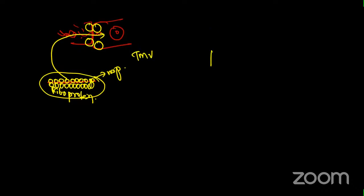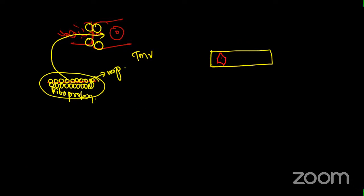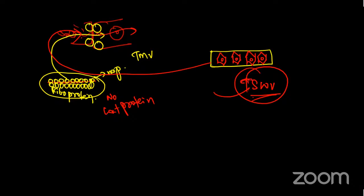In tubular movement, the complete virus particle - genome plus coat protein - is transported inside a tube through plasmodesmata to the new cell. Tomato spotted wilt virus uses this tubular strategy, where tube formation occurs and the virus is transported across to the new cell.